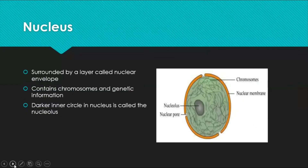The nucleus is often called the brain of the cell, as it is a vital organelle. It is surrounded by a nuclear envelope — also called the nuclear membrane — which has small gap-like structures called nuclear pores. The nucleus gets its dark color from the nucleolus inside it, and it carries the cell's genetic information. Observe all the images given in the presentation carefully, as you may be asked to label the parts in exams.